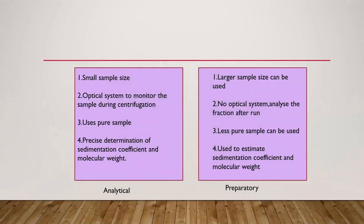In the analytical ultracentrifuge, only a small sample is used and an optical system is used to monitor the sample during centrifugation. Only pure samples are used, so we can precisely determine the sedimentation coefficient and molecular weight of molecules. In the preparatory ultracentrifuge, large sample sizes can be used, there is no optical system to analyze the molecules during centrifugation, and less pure samples can be used. It is used to estimate the sedimentation coefficient and molecular weight of molecules.